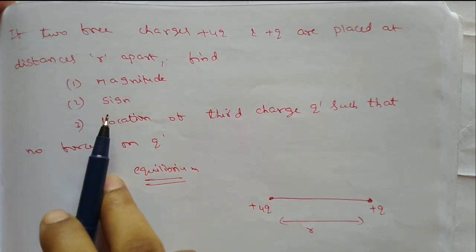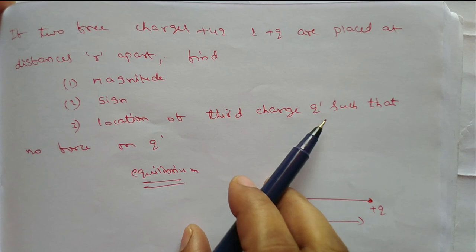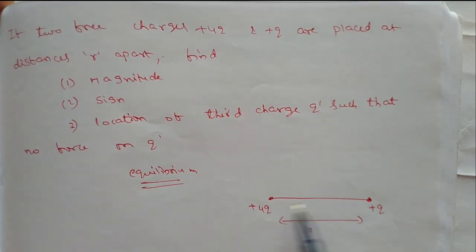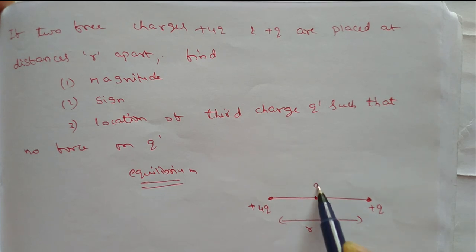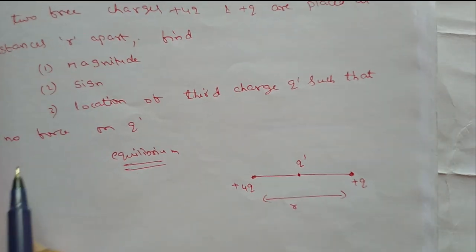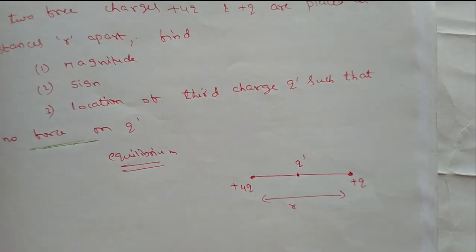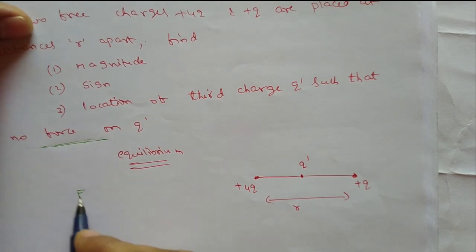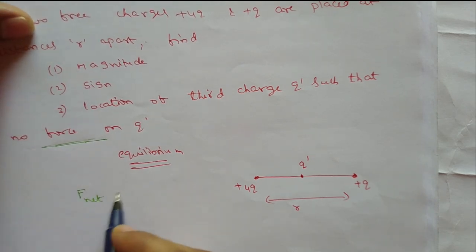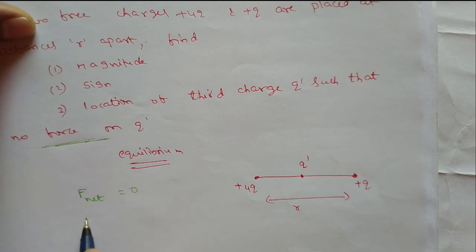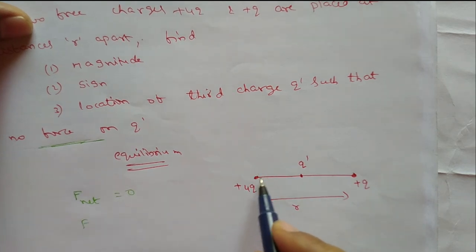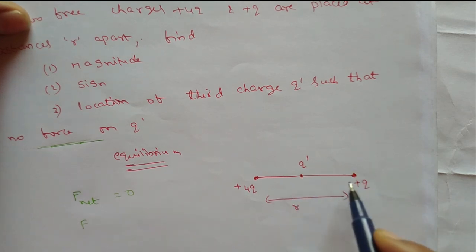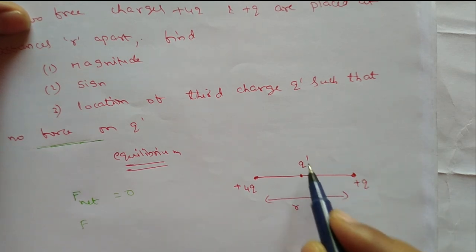Find the magnitude, sign, and location of a third charge q dash such that there is no force on q dash. Given that there is no force on q dash, it is in an equilibrium state, meaning F net equals zero. F net means the force due to the plus 4q charge on q dash and the force due to plus q on q dash.